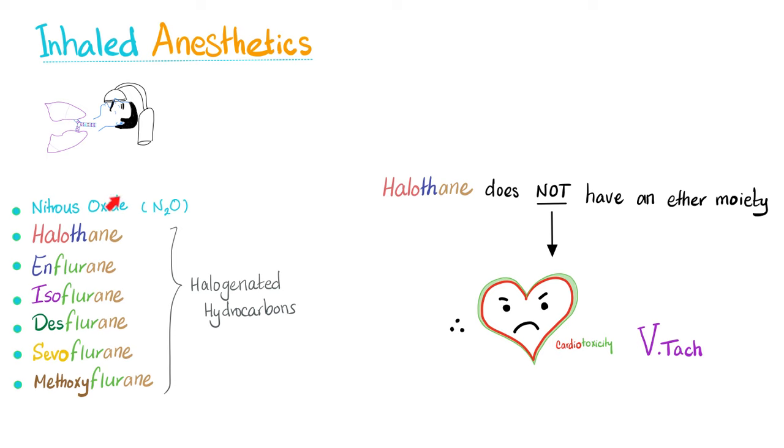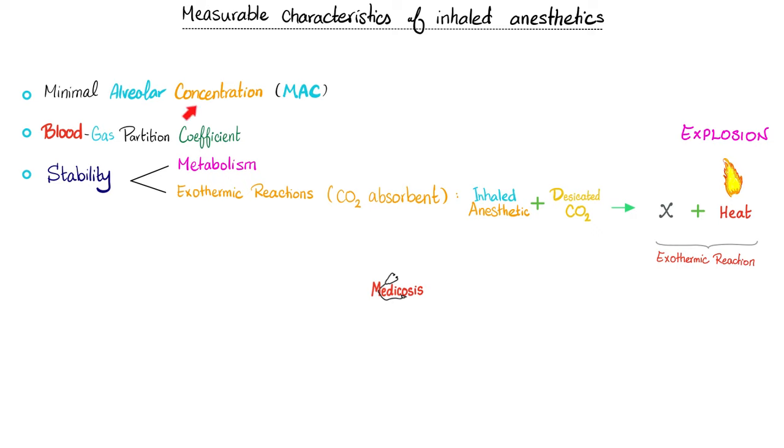Inhaled anesthetics are here. All of them are halogenated hydrocarbons except nitrous oxide. Let's talk about halothane. Are you halogenated? Of course, I'm halo. Yeah, of course I'm halogenated. But however, I do not have an ether component in me. And that's why I am cardiotoxic. Hashtag ventricular tachycardia. Some measurable characteristics of the inhaled anesthetic include the minimal alveolar concentration. We have discussed it before. Blood gas partition coefficient. We have talked about it before. And stability, which means metabolism. And the exothermic reaction. A medication is said to be unstable if it's metabolized rapidly. But what is exothermic reaction? Exothermic reaction is a reaction that produces lots of heat. For instance, an inhaled anesthetic plus some carbon dioxide can give you tons of heat to the point of an explosion. These inhaled anesthetics could be flammable.